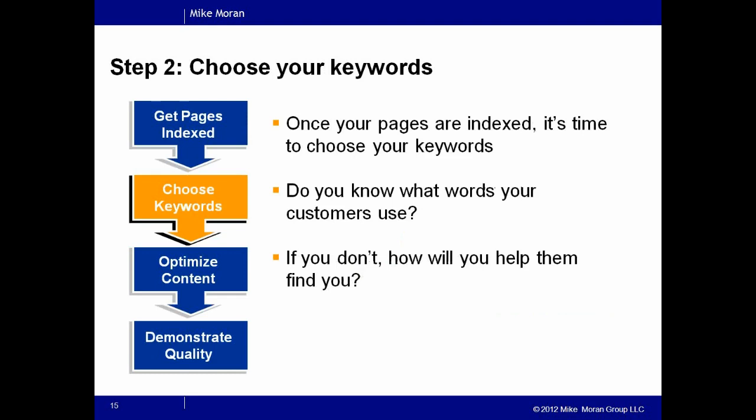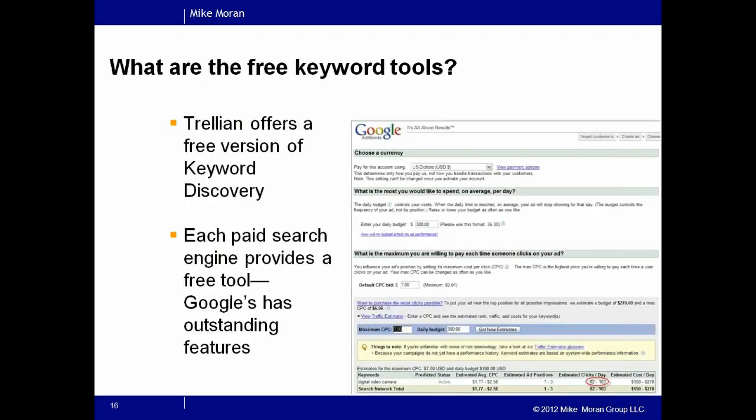The second step is to choose your keywords. Unlike most other forms of marketing, you have to actually know what people are looking for in order to show up. You have to figure out which words people are typing in and which ones make sense for them to find you with. Every search engine provides a free keyword tool — Google provides one, Bing provides one. But they're only going to tell you about the searches they see within their own search engine.